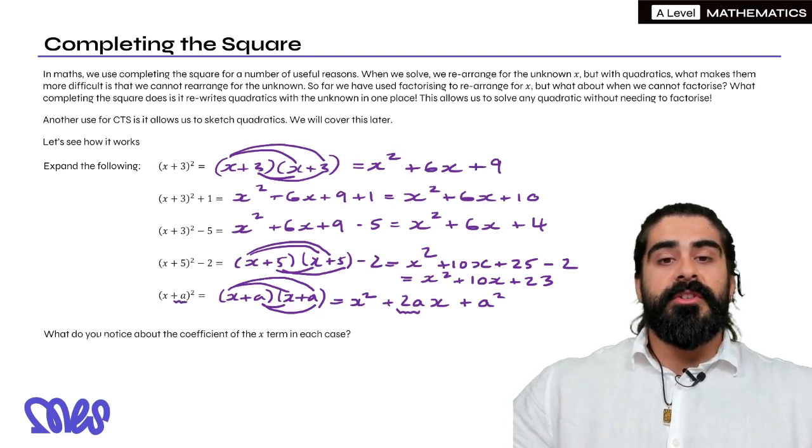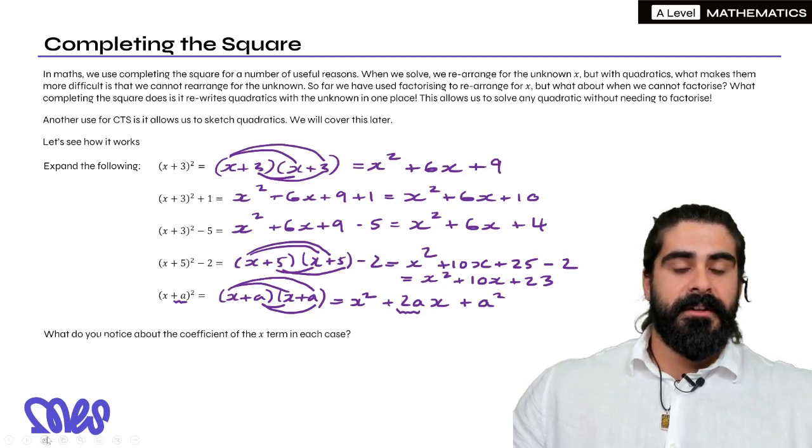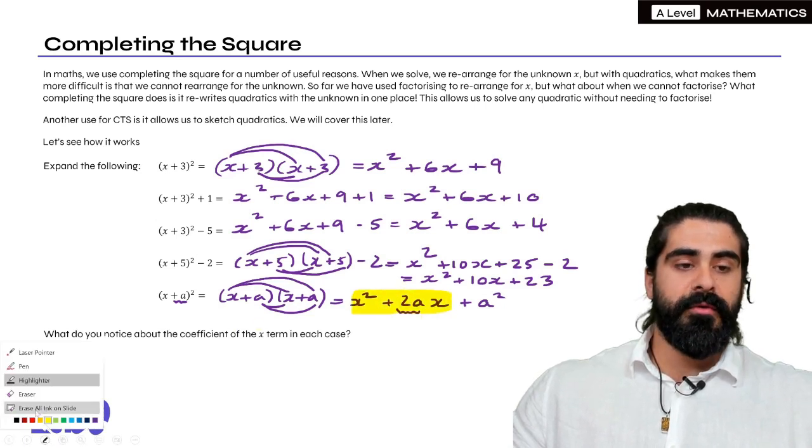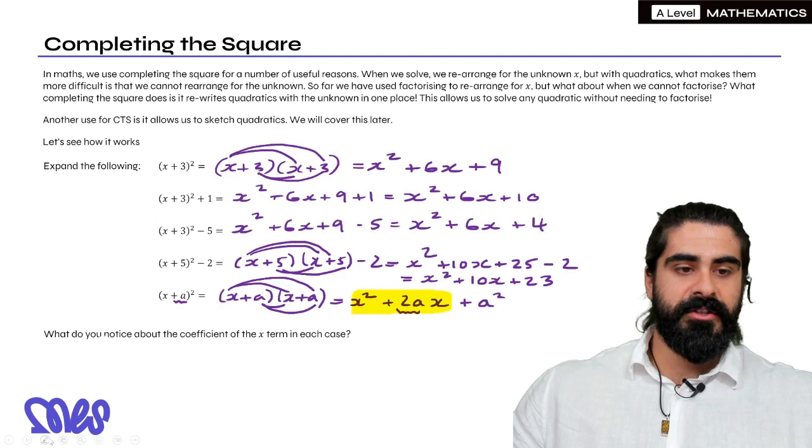Now why are we doing this here? What do you notice about the coefficient of the X term in each case? So if you look at the coefficient of the X term here, we have 2A, which is always double the number inside the bracket. So what we're going to do with completing the square is that in this last line, if I rearrange slightly, so if I rearrange for just X squared plus 2AX, I can move the A squared to the other side.